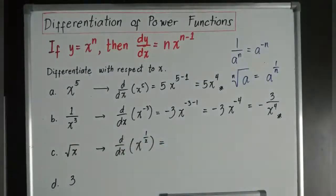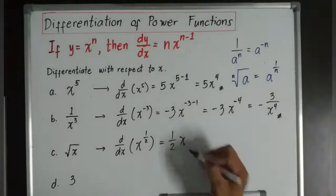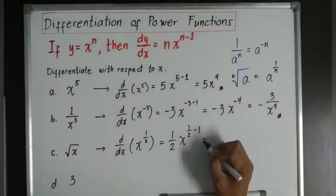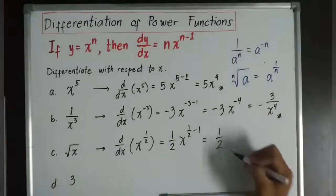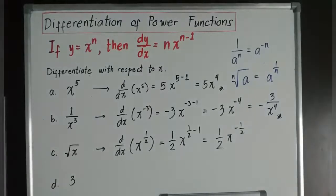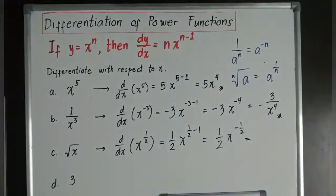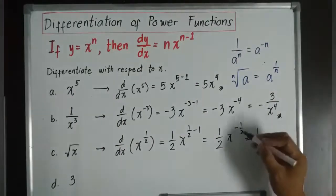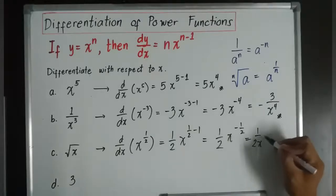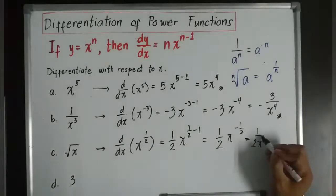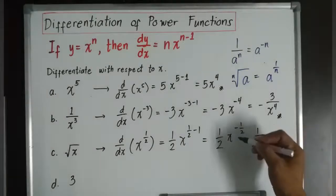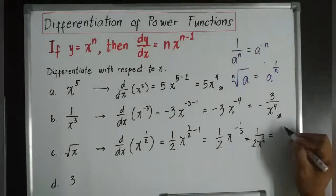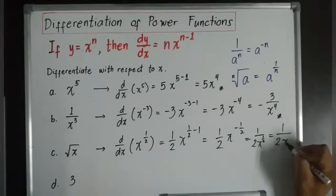So the derivative of x to the power of 1 half will now become 1 half times x to the power of 1 half minus 1. Thus, it is equivalent now to 1 half times x to the power of negative 1 half. I'll just do it step by step so that you don't get confused. 1 half, then I'll bring in that x to the power of negative 1 half below. I brought it to the denominator, so it will now become 1 over 2x to the power of 1 half, which is now equivalent to 1 over 2 square root of x.